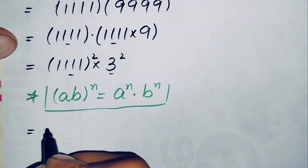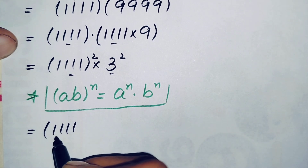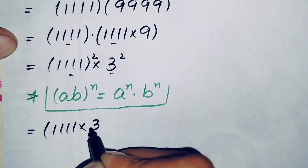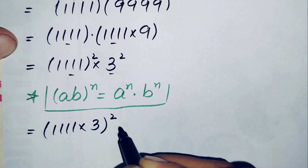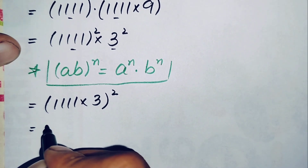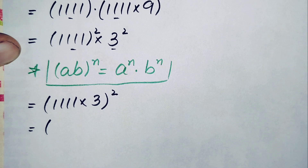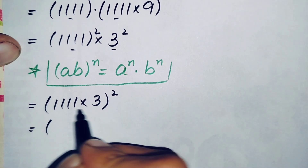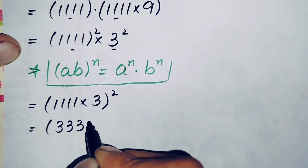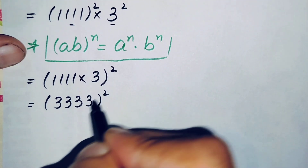We multiply the bases and take the power out as common. So 1,111 times 3 raised to power 2 gives us 1 times 3 is 3, and 3 times 1 is 3, so this becomes 3,333 whole squared.